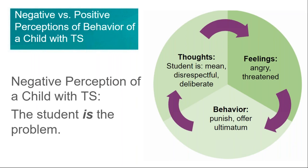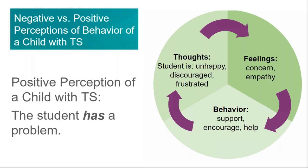With a negative perception, you feel the student is the problem. But with a more positive perception, the student has a problem. When thinking that way, I could think: Sally's got to be really discouraged today, her tics are a lot worse than usual, she's feeling very frustrated. Of course I'm going to feel empathetic and concerned. When you feel that way, your behavior is more likely to be supportive — I'm going to encourage, I'm going to try to help her out.